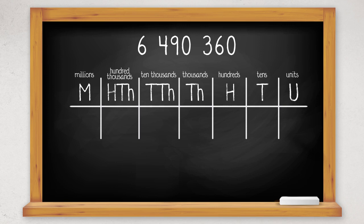Our number has zero units, six tens, three hundreds, zero thousands, nine ten thousands, four hundred thousands, and six millions.